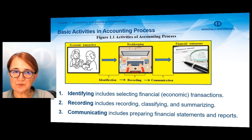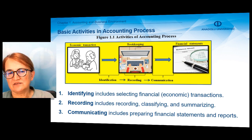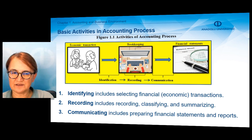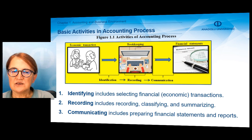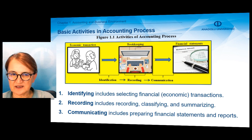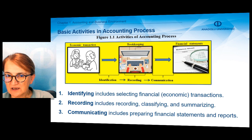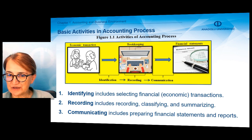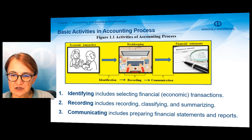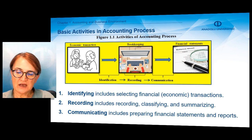In the accounting process, there are three main activities. In the first activity, we identify the events — this is called the identifying process. In the second process, recording or measuring, which includes recording, classifying, and summarizing. And in the last step, we have to communicate all the information with the decision makers. Therefore, financial statements and reports must be prepared.